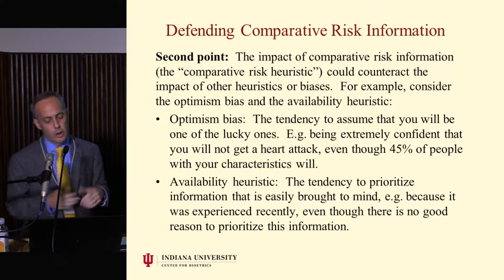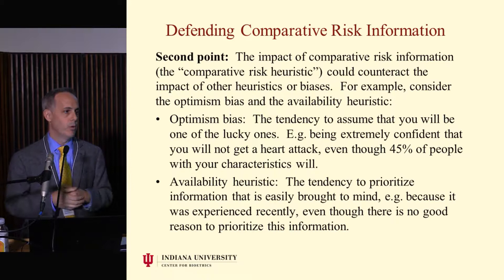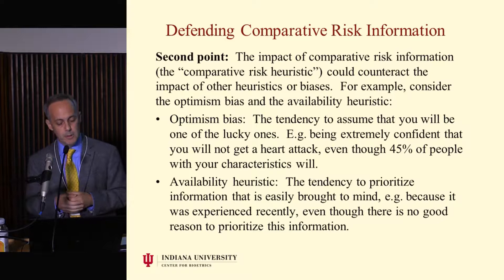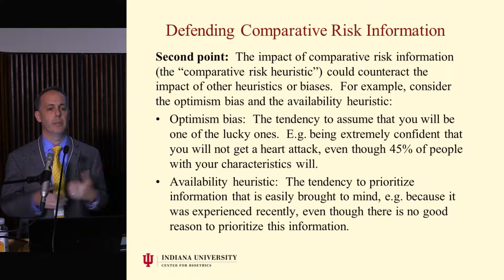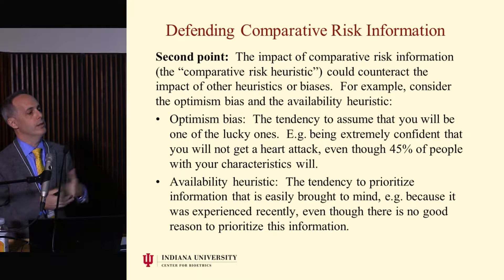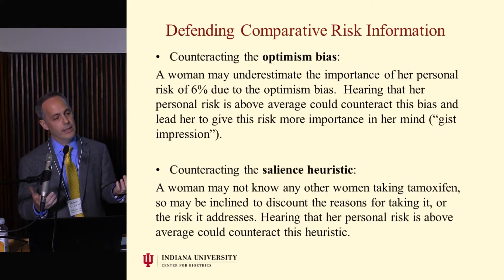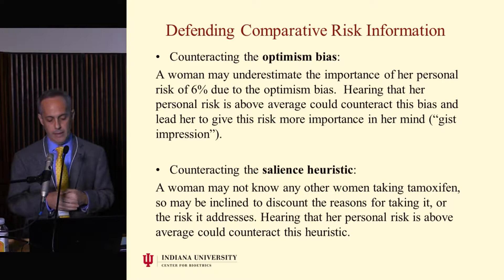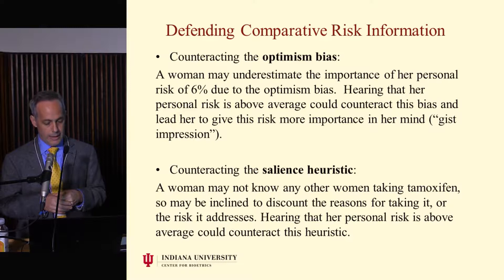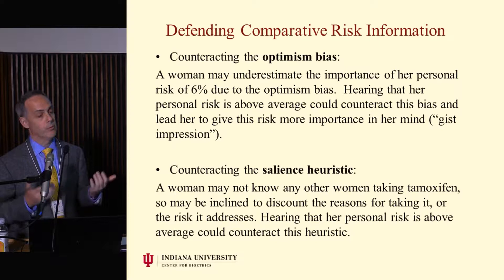Second point: the impact of comparative risk information could counteract the impact of other heuristics and biases. The optimism bias is the tendency to assume you will be one of the lucky ones — you hear that 45% of people like you will get a heart attack and you're sure you won't. The availability heuristic is when you value information you've just heard even if there's no reason to value that information more. A woman underestimates the importance of her personal risk of 6% due to optimism bias. Hearing that her personal risk is above average could counteract that bias and lead her to see the risk as important.